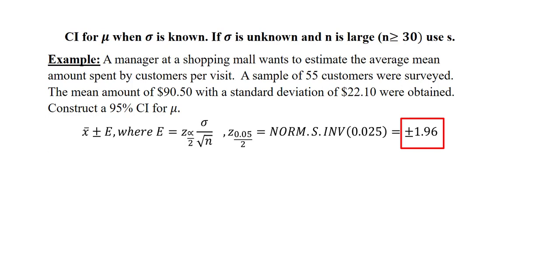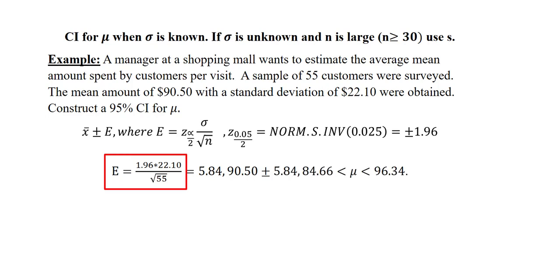I'm going to have this on both the right tail and the left tail, so I have plus or minus 1.96. Now I compute my margin of error by taking my critical value 1.96 multiplied by my sigma — which I'm replacing by S in this case — which is 22.10. And then in the denominator, I will take the square root of n, which is the square root of 55. When I compute this to two decimal places, I will get 5.84.